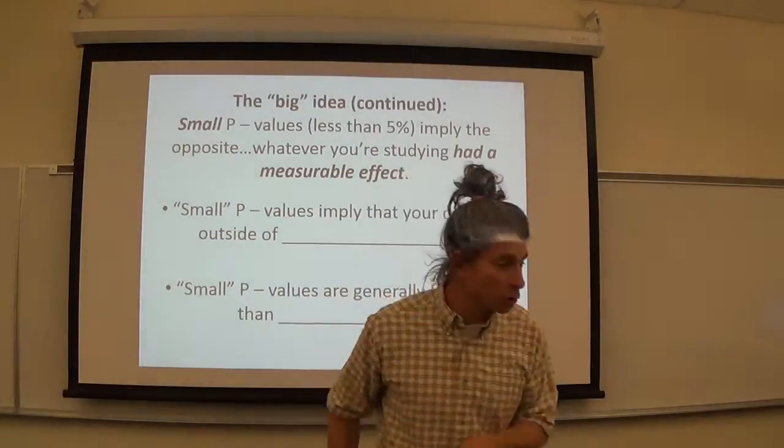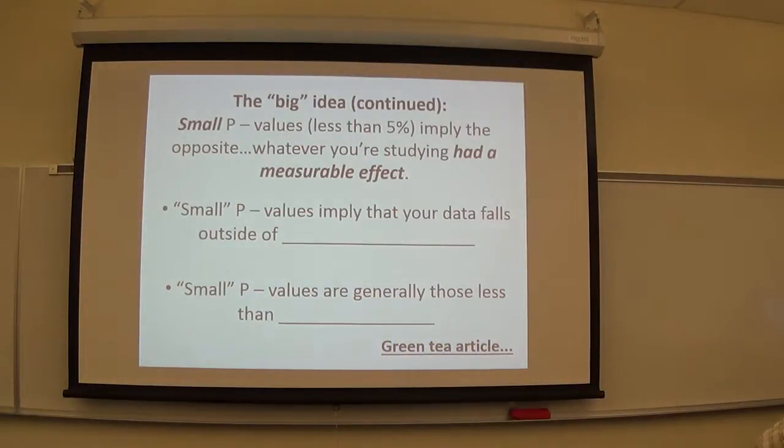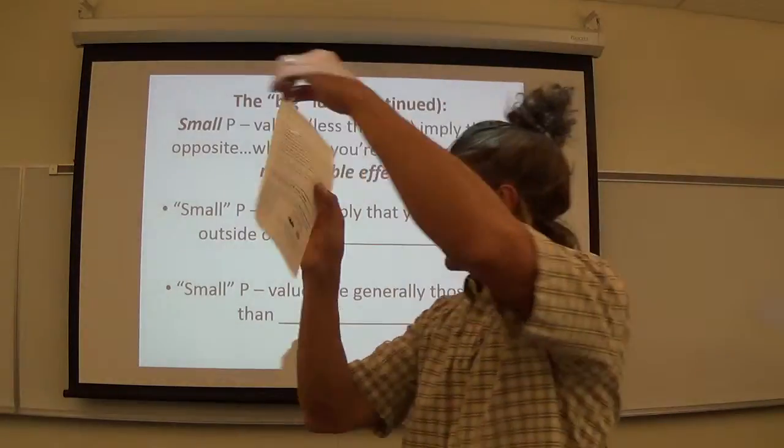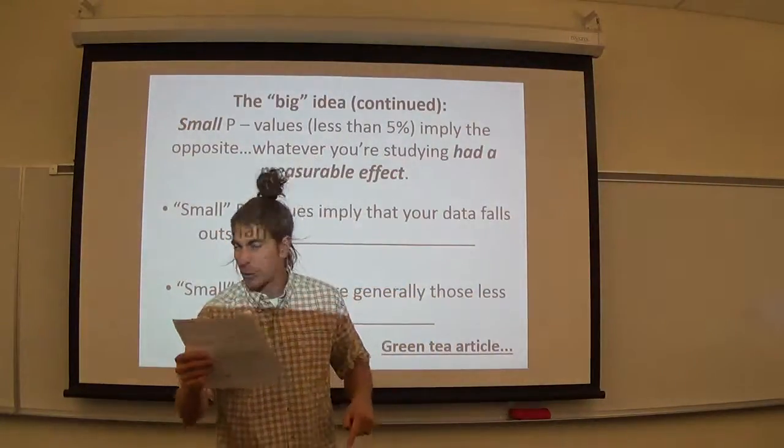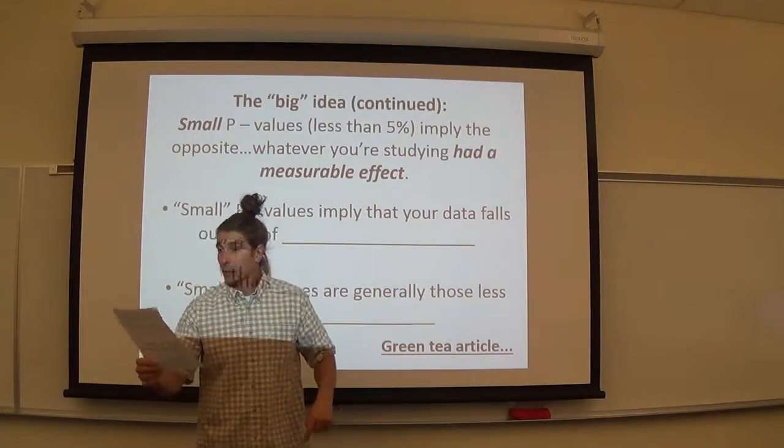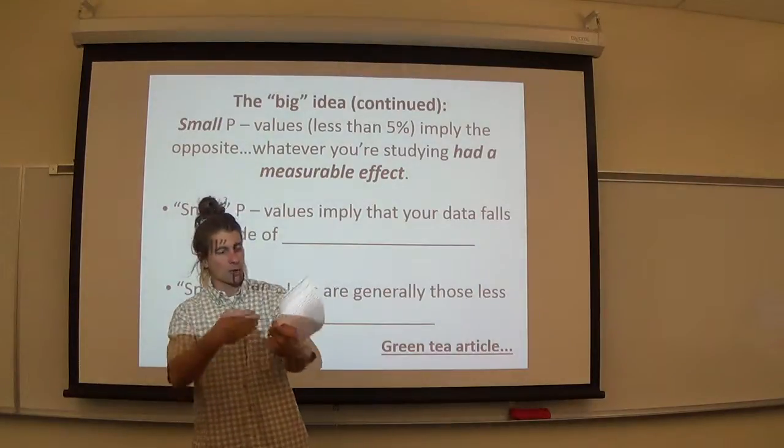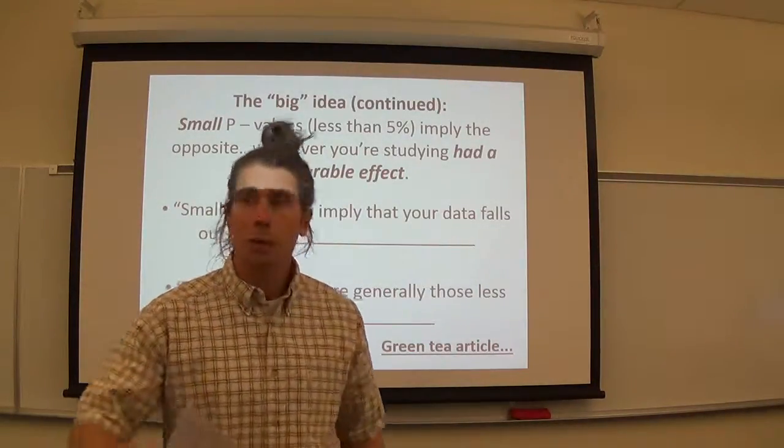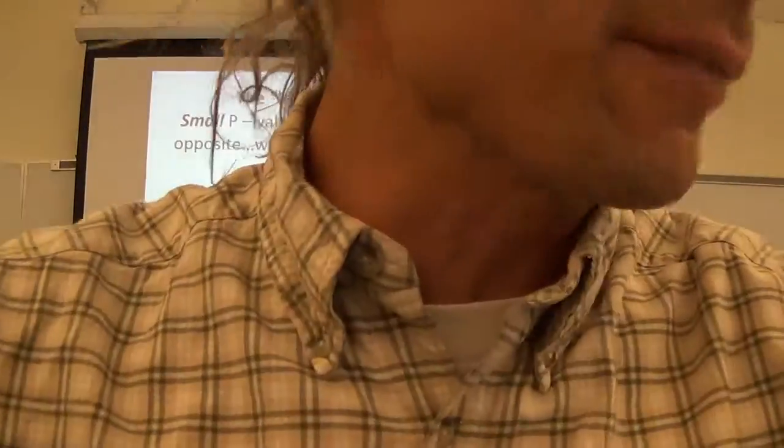Let's take our five and also read the next article in your handout here, the front and back with the color, the green tea and prevention of breast cancer. It starts on page one and flips over to about half of page two. So take five, read the article, we'll reconvene.